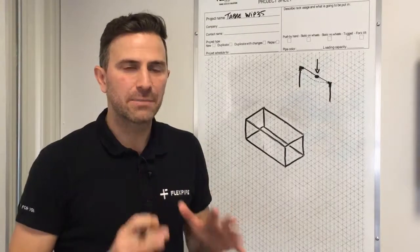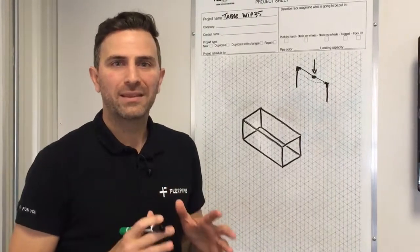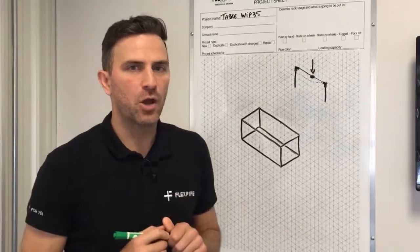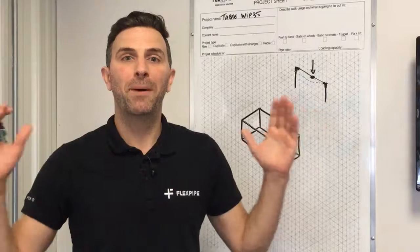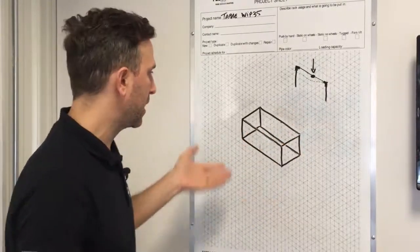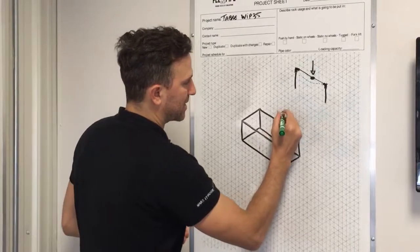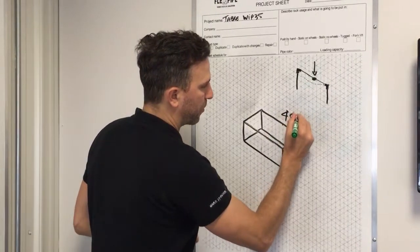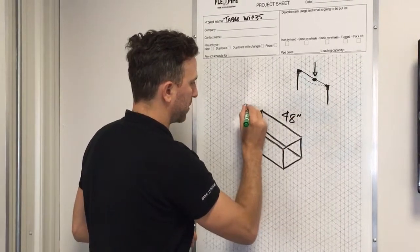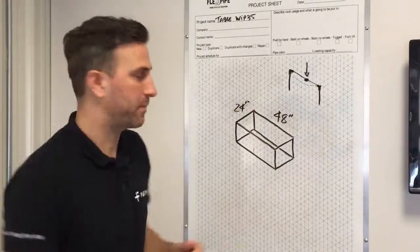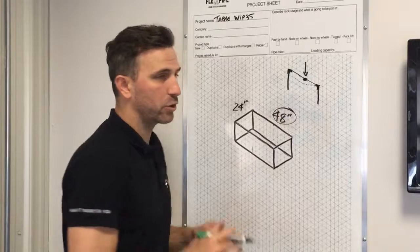we'll see that. We have a basic and simple mathematic formula and basically how it works, it depends on your longest pipe span. So basically if you have, let's say a cart like this, let's say your longest span will be 48 inches by 24 inches. So you refer to the longest pipe, in that case will be 48